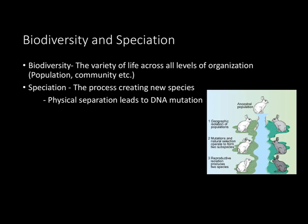Biodiversity and speciation. Biodiversity is a very broad term referring to the variety of life across all levels of organization, such as a population, a community, etc. Speciation is the process of creating a new species. Referring to the diagram, it starts with a physical separation — say a rabbit lives on one side of a river, but a river forms and some rabbits move to the other side. Since there's a physical barrier, the two populations split and over time have mutations in their DNA. Once the DNA begins to mutate, they won't be able to produce fertile offspring, creating two separate species from the ancestral population.